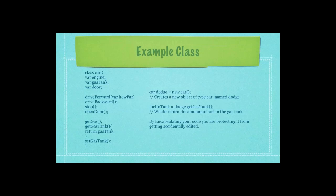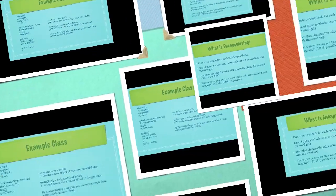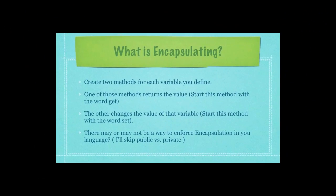As you can see here on the right side of the screen, I've created a new object called dodge, just as I showed you on the previous slide. I'm then able to use object dodge, followed by the dot operator and the function get gas tank to access the value within the variable gas tank and then assign it to the word fuel in tank as we got here. This is what we refer to as encapsulation.